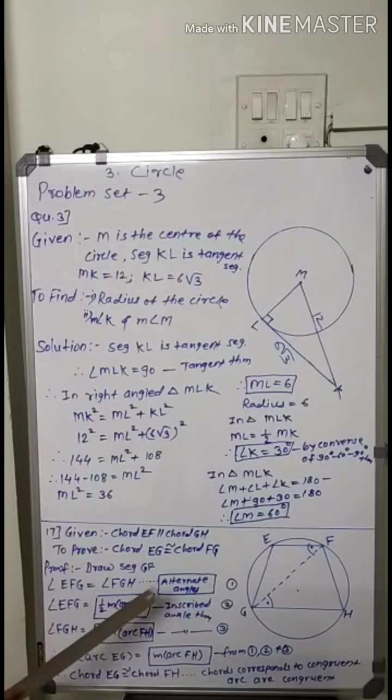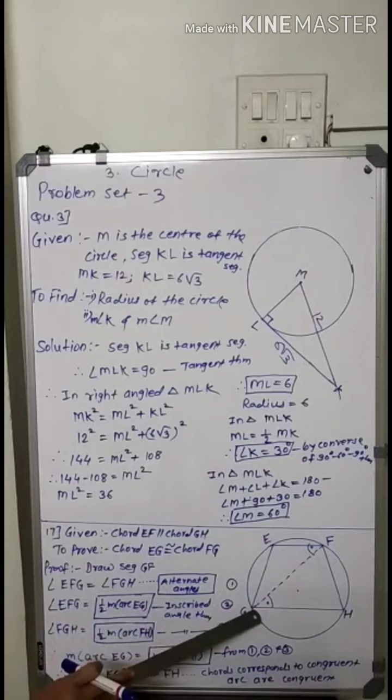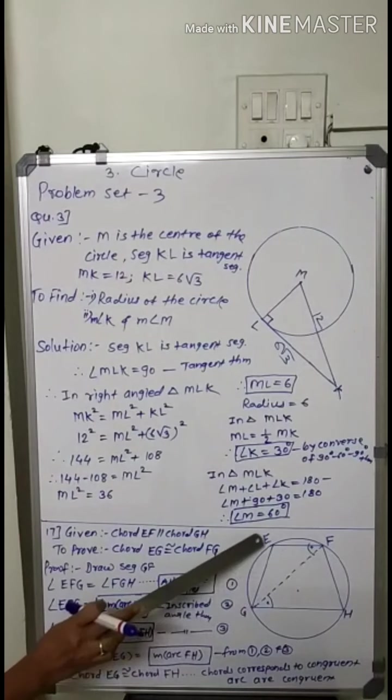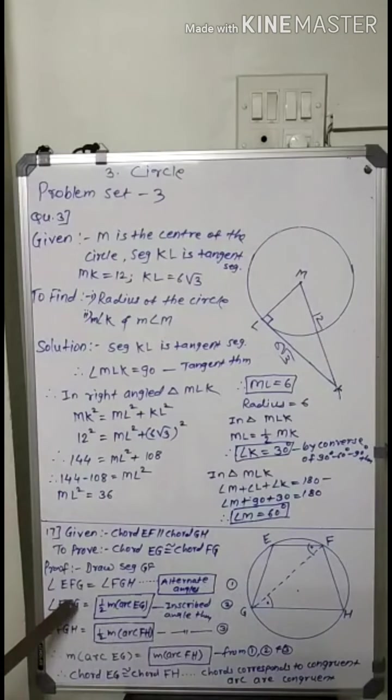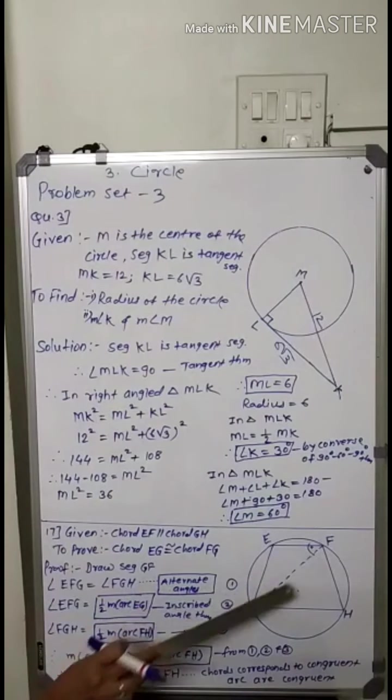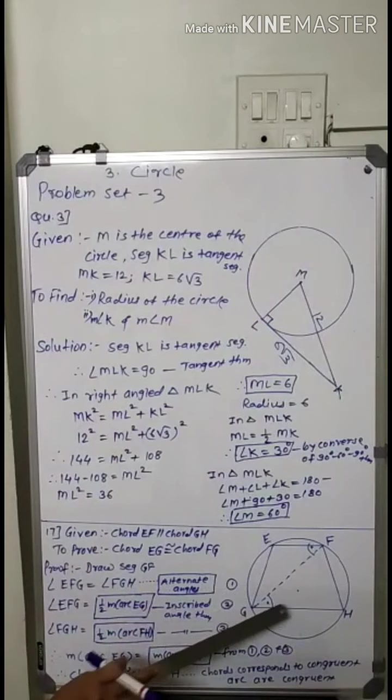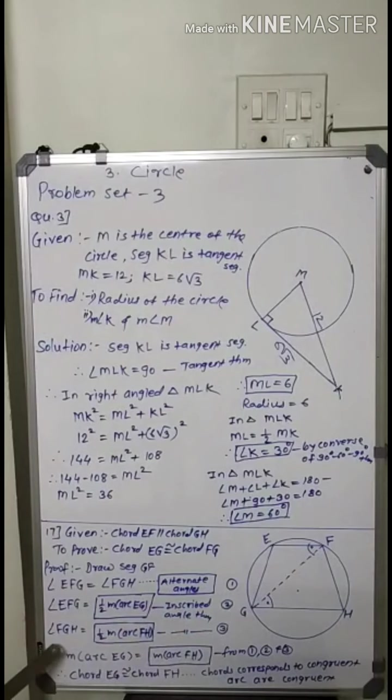Therefore angle EFG is inscribed angle and it intercepts arc EG. So angle EFG equal to half major arc EG by inscribed angle theorem. Similarly angle FGH is also inscribed angle and it intercepts arc FH. FGH equal to half major arc FH. Reason inscribed angle theorem. This is statement 1, this is statement 2, and this is statement 3.